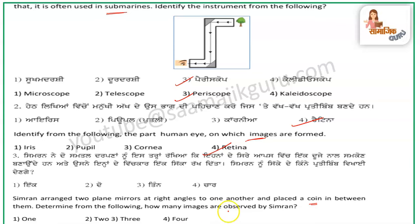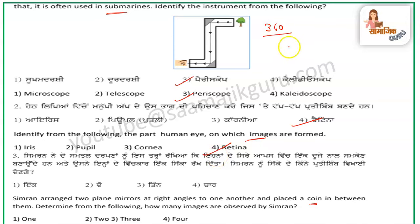How many images are observed by Simran? The angle made is 90 degrees — a right angle. So we will put 90 degrees and minus one. Nine divided gives 36. Four minus one, how many images are made? Three. So three images will be made.